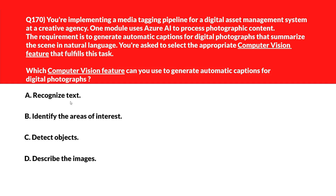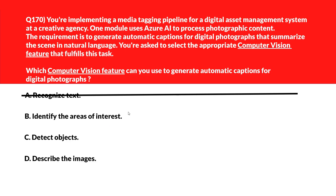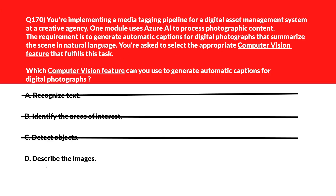This question is about computer vision features. Option A: Recognize Text — extracts printed or handwritten text from images but doesn't generate scene-level captions. Incorrect. Option B: Identify Areas of Interest — highlights focal points in an image without explaining their context or meaning. Incorrect. Option C: Detect Objects — identifies items in an image but doesn't translate them into descriptive sentences. Option D: Describe the Images — produces natural language summaries describing image content for caption generation. Lock option D, Describe the Images, as the right choice. Please don't go away — see you in the next part of this series.